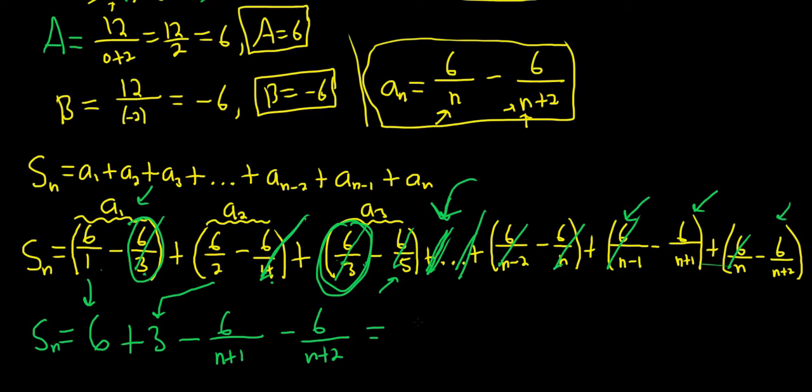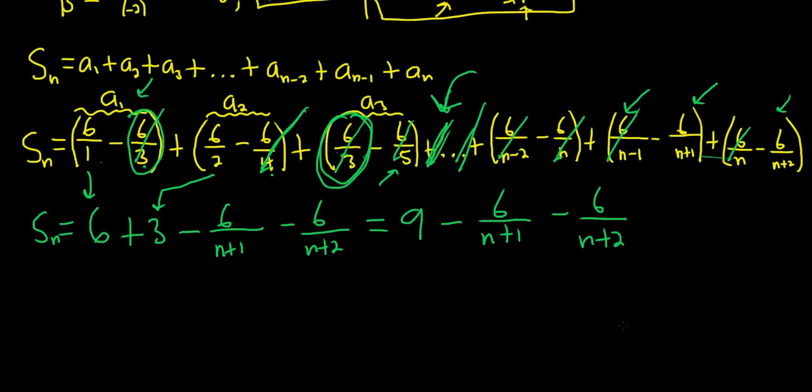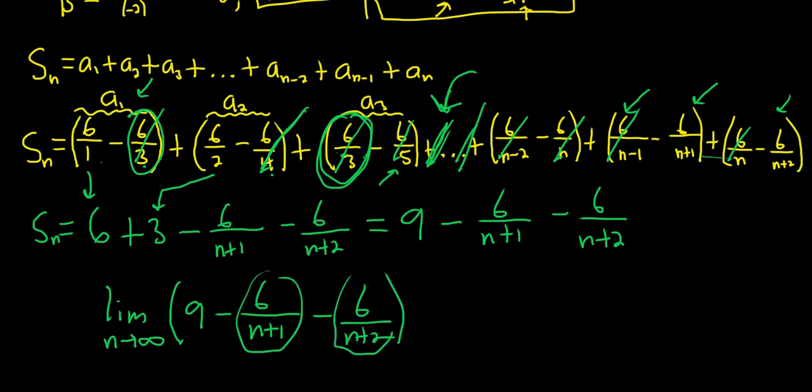Okay, so now we have 9 minus 6 over n plus 1 minus 6 over n plus 2. So pretty tricky, right? Pretty tricky. It's always tough to find the pattern. Sometimes, even if your pattern is incorrect, you'll still get the right answer. But it's worth doing it 100% correct. Now we'll take the limit as n goes to infinity. And these two pieces here are going to go to 0 as n gets really big. So this is just 9. And that would be your final answer. So I hope this video has been helpful.